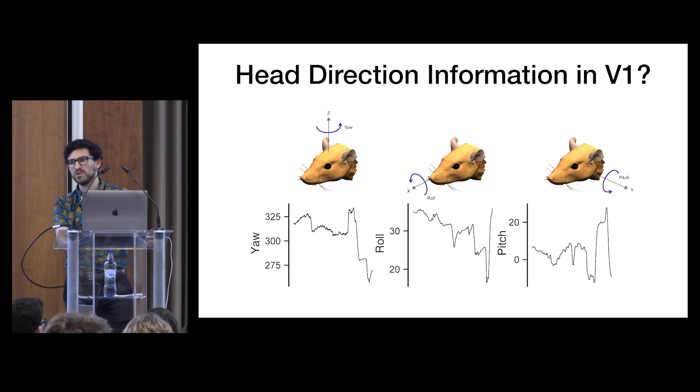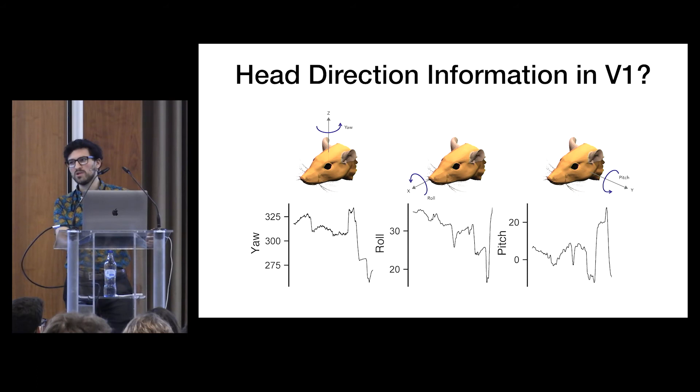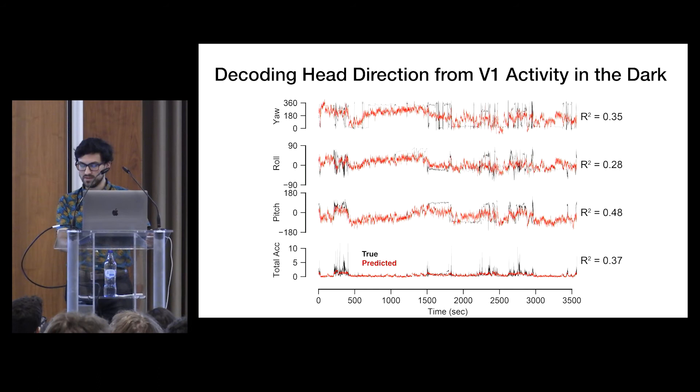And here's an example of one session recorded in the dark. So this is the half of the data that the model was tested on that it hasn't seen before, with the true movement plotted in black and the predicted in red. And so, as you can see, we can get pretty good predictions, not just for the total acceleration, so how much the animal is moving, but also for the pitch, the roll, and the yaw signals as well. Even though there are clear caveats with using a linear regression on a circular variable, we can still do pretty well, and I think this is just a lower bound of what can be done.